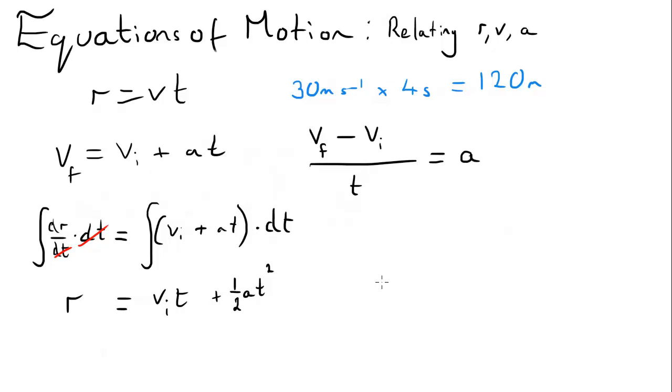you've got initial velocity of 2 metres per second, so that's Vi. You've got an acceleration of 3 metres per second, and the time you've done it all in is only 2 seconds.